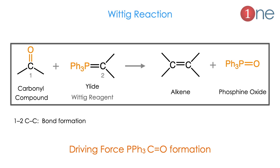The Wittig reaction means the carbonyl compound reacts with the ylide. Ylide is an ionic species, also called the Wittig reagent, where phosphorus is attached with a triphenyl and carbon system. The carbonyl compound reacts with the ylide to form an alkene. The main driving force for this reaction is phosphine oxide, because the phosphorus-oxygen bond is very stable. The important thing to note is the new carbon-carbon bond formation as well as its stereochemistry.